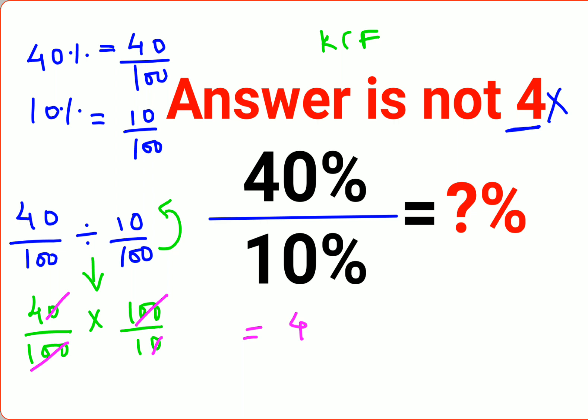But the problem is your answer is supposed to be written in percentage. When you have a percent and want to convert it into numbers, you divide by 100. If you have a number and want to convert it into a percent, you need to multiply by 100. So the answer comes out to be 400 percent.